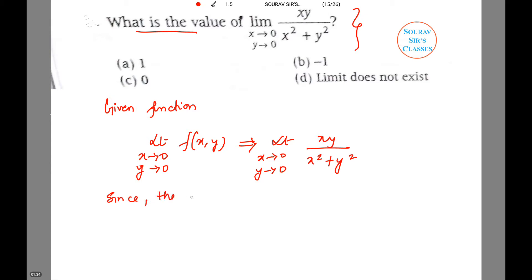Since the values of the function have different values along different paths, we can say that the limit does not exist. This is the main reason.